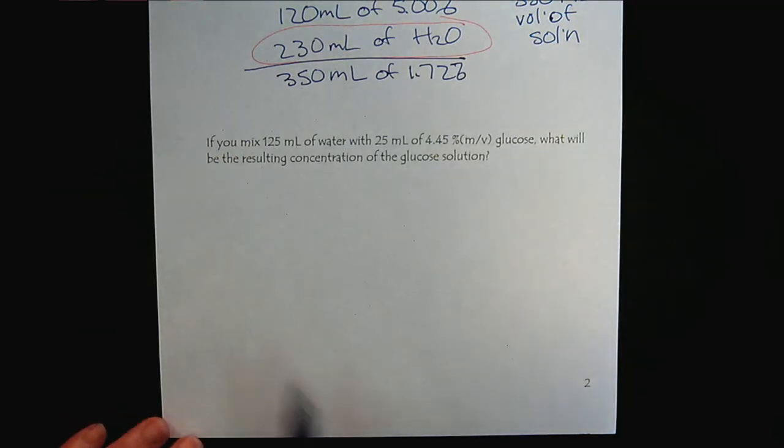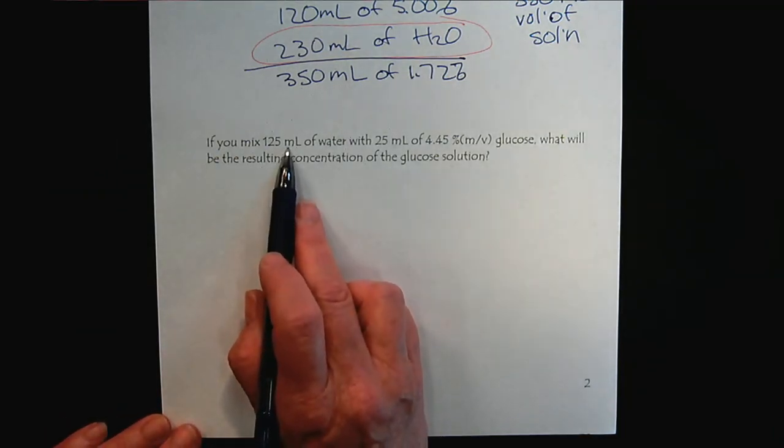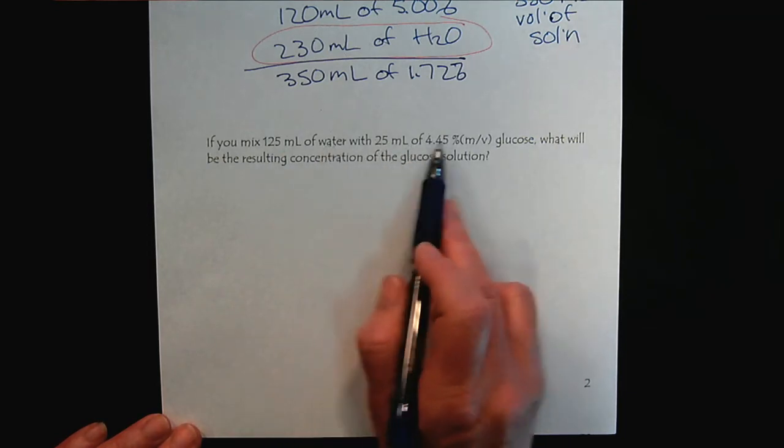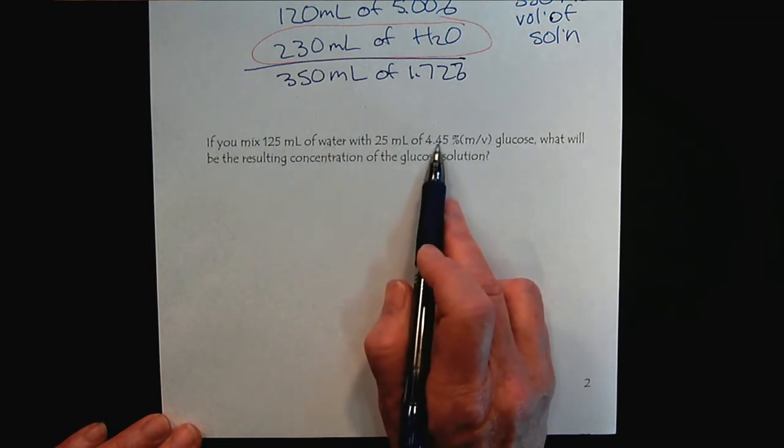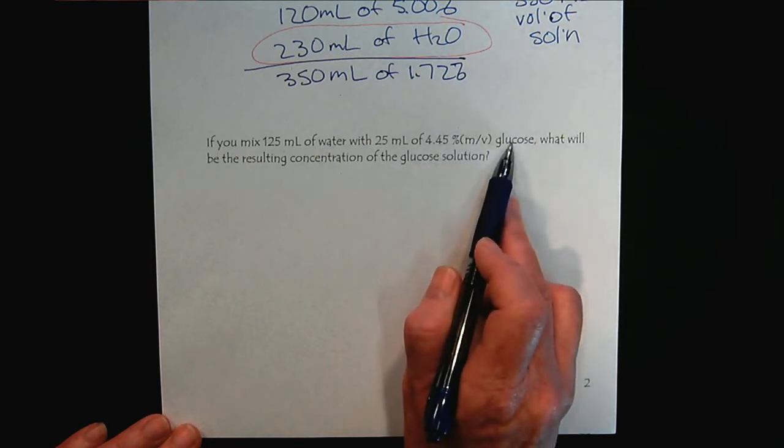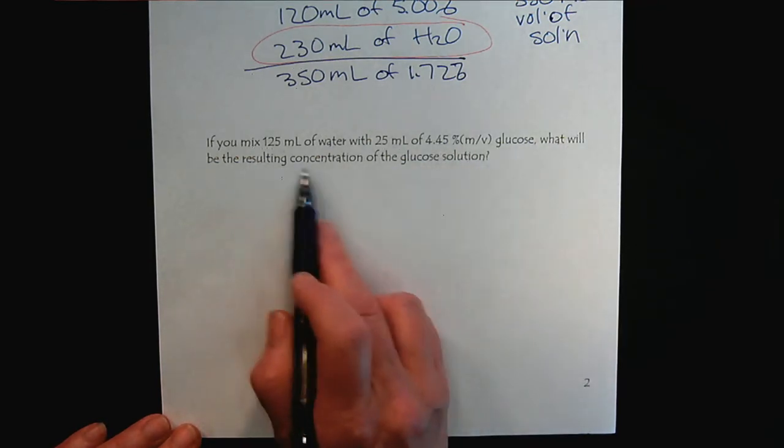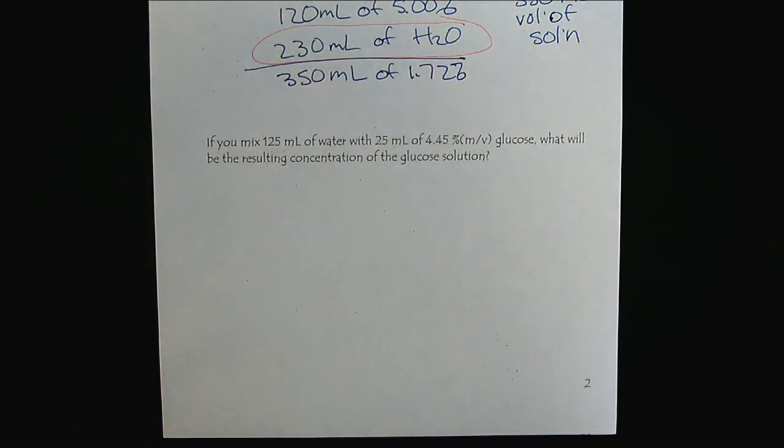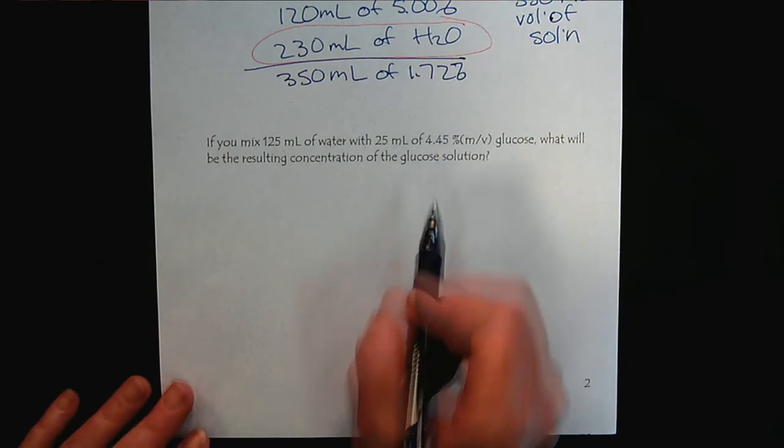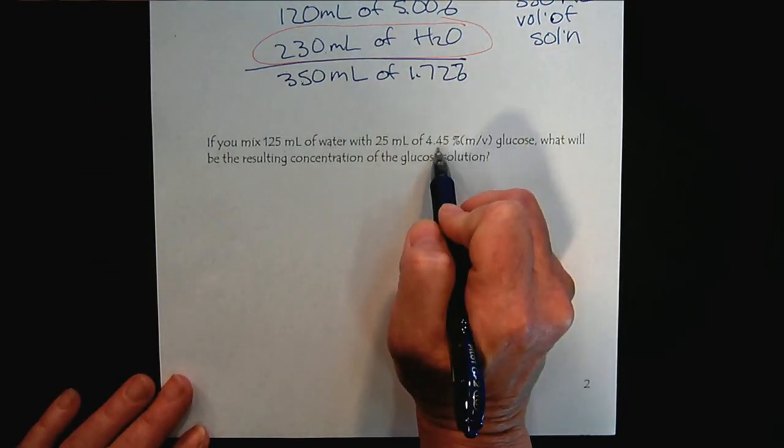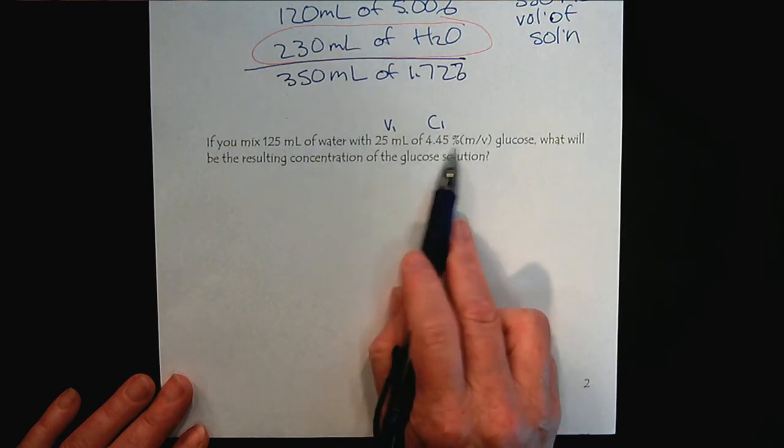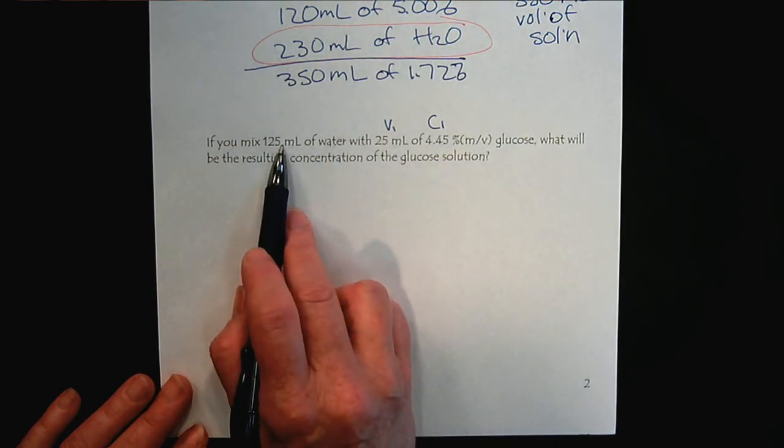If we mix 125 mils of water with 25 mils of a 4.45% mass over volume glucose, what will be the resulting concentration? This one is slightly different. There's our initial volume and our initial concentration of glucose. We're going to do a dilution. We're going to add water. But this is not V2.